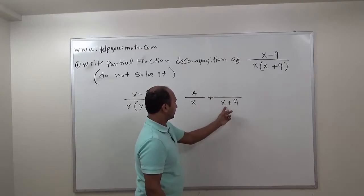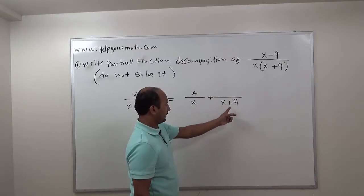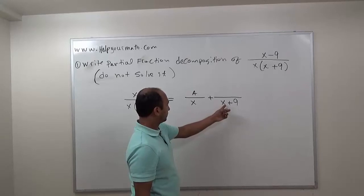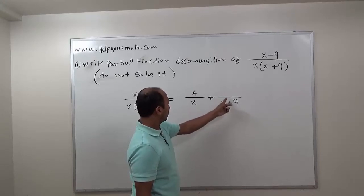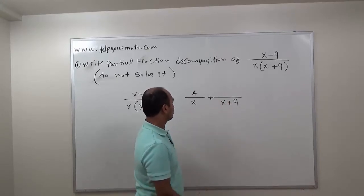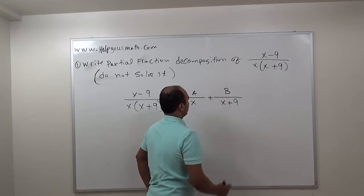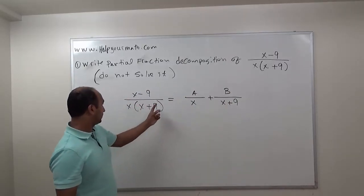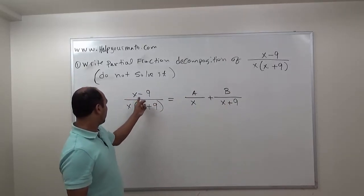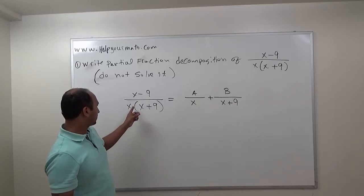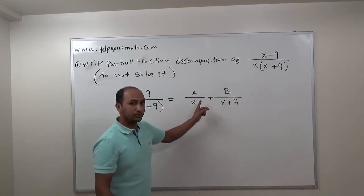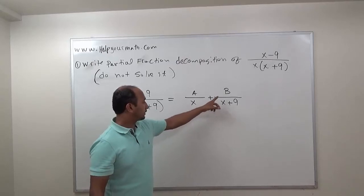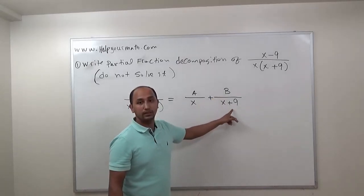For the next factor, we also look at the factor of this whole thing. When we put something on top, we write a linear constant — just B. So the partial fraction decomposition of (x minus 9) over x times (x plus 9) equals A over x plus B over (x plus 9).